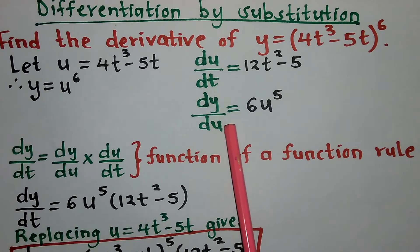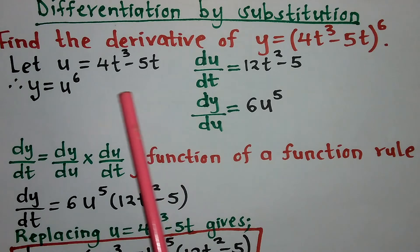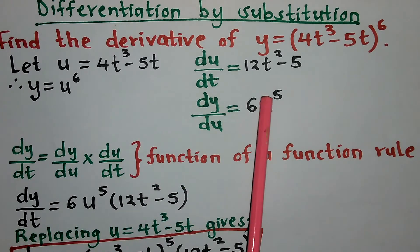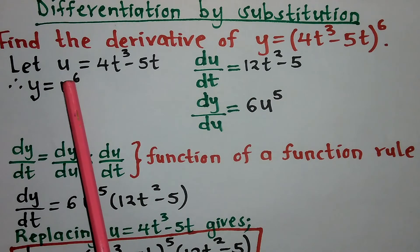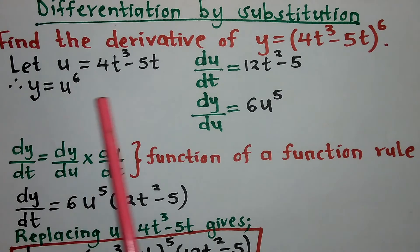The derivative of y with respect to u will be 6 minus 1 is 5, and 6 by coefficient 1 is 6. So dy/du = 6u⁵.